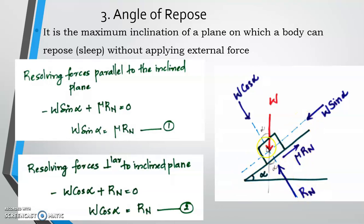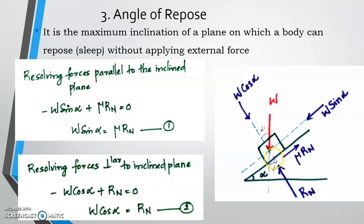Looking at the inclined plane: the direction of motion is considered, with friction developing in the opposite direction. Friction F equals mu into Rn, where Rn is the normal reaction perpendicular to the inclined surface.